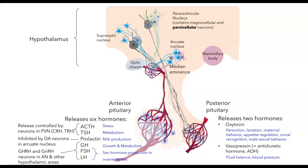Once the hypothalamus stimulates or inhibits their release, what do these anterior pituitary hormones do? In a nutshell, ACTH is involved in the stress response — physiological or psychological stressful conditions can lead to the release of ACTH, which will then lead to the release of the glucocorticoids. TSH acts on the thyroid gland to trigger the release of thyroid hormone, which increases metabolic rate. Prolactin stimulates milk production. Growth hormone is involved in growth and metabolism. The gonadotropins, FSH and LH, are involved in sex hormone production in the gonads — the ovaries or the testes.